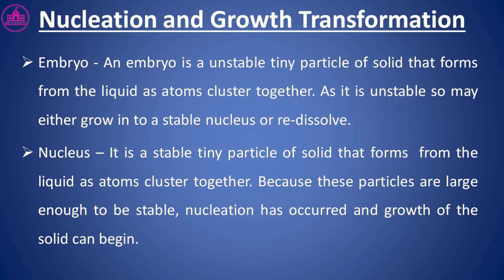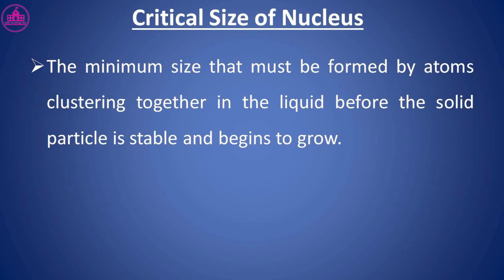A nucleus is a stable tiny particle of solid that forms from the liquid as atoms cluster together. Because these particles are large enough to be stable, nucleation has occurred and growth of the solid can begin. The critical size of nucleus is the minimum size that must be formed by atoms clustering together in the liquid before the solid particle is stable and begins to grow.